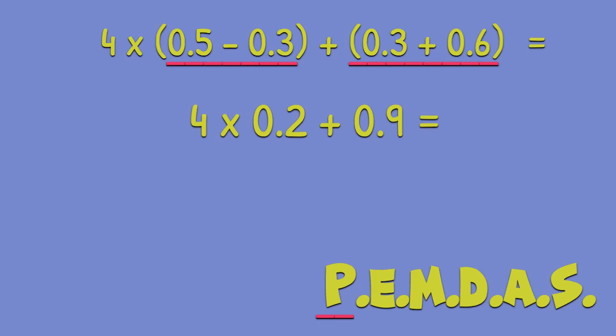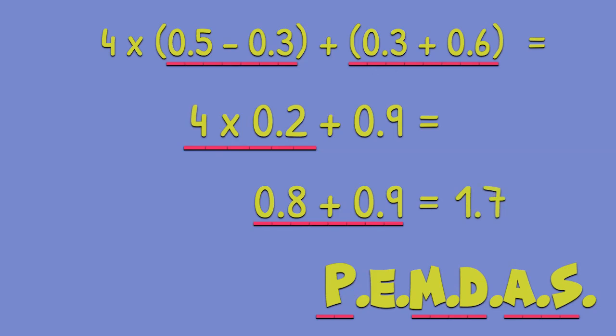There are no exponents, so we will look for multiplication or division and we have one multiplication operation here. 4 times 2 tenths, 4 lots of 2 tenths, is 8 tenths. So now we just have 8 tenths plus 9 tenths, which is 17 tenths, which in everyday math world is 1 and 7 tenths.